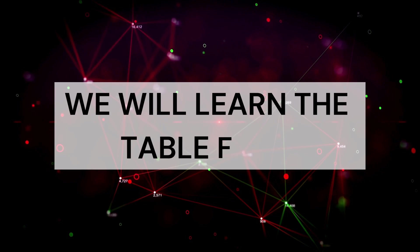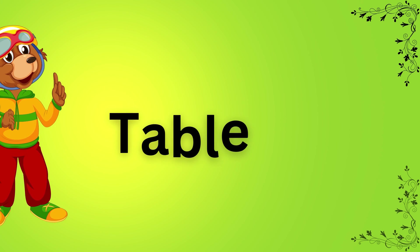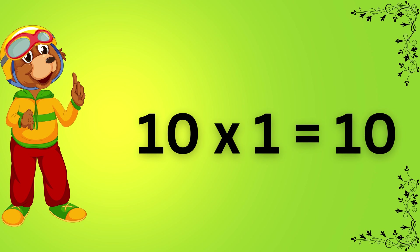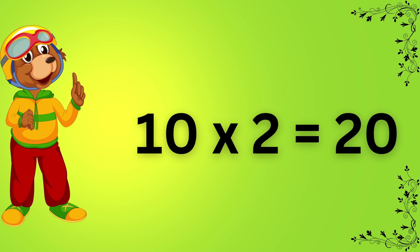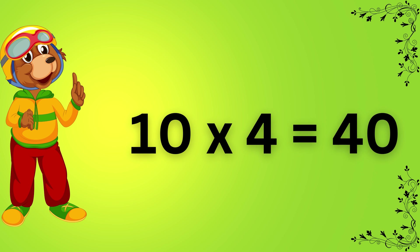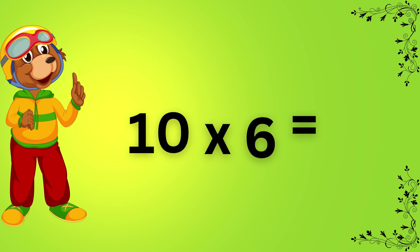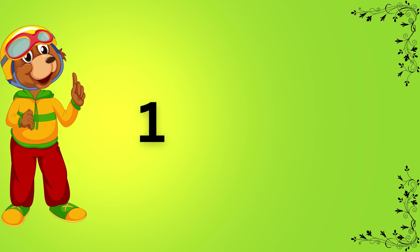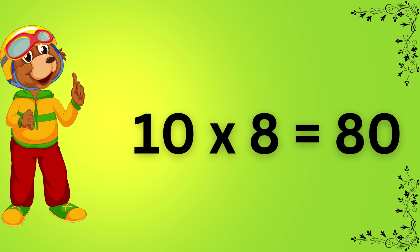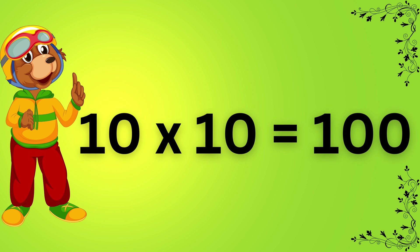Today, we will learn the table from 10 to 20. Table of 10: 10 1's are 10, 10 2's are 20, 10 3's are 30, 10 4's are 40, 10 5's are 50, 10 6's are 60, 10 7's are 70, 10 8's are 80, 10 9's are 90, 10 10's are 100.